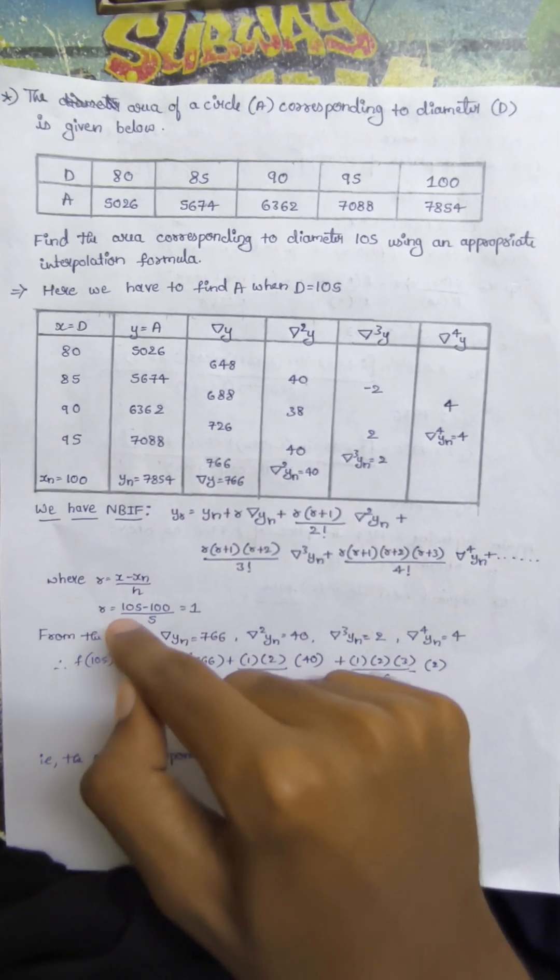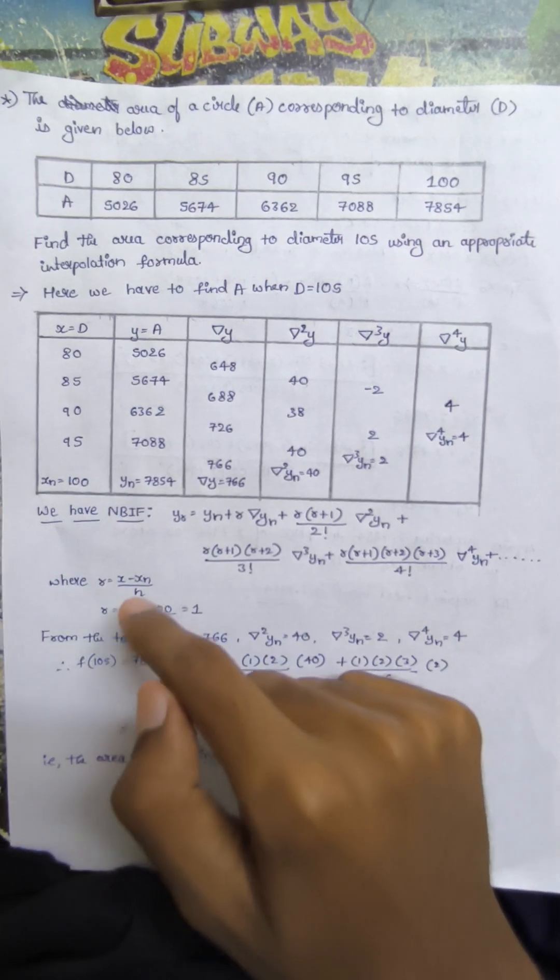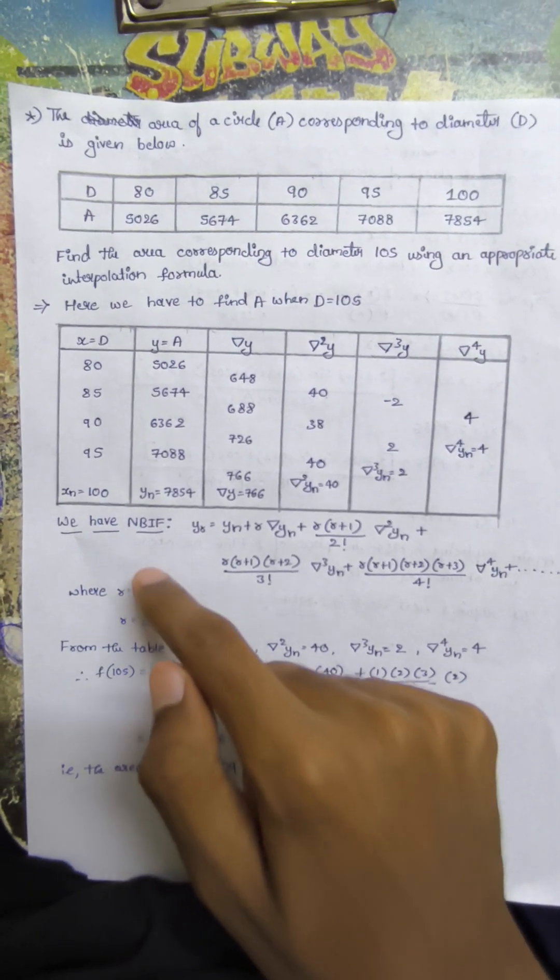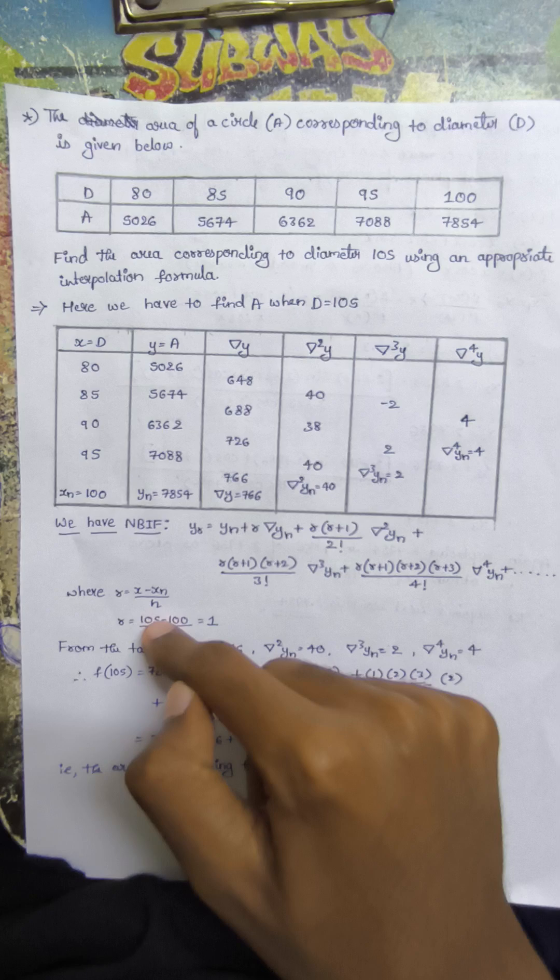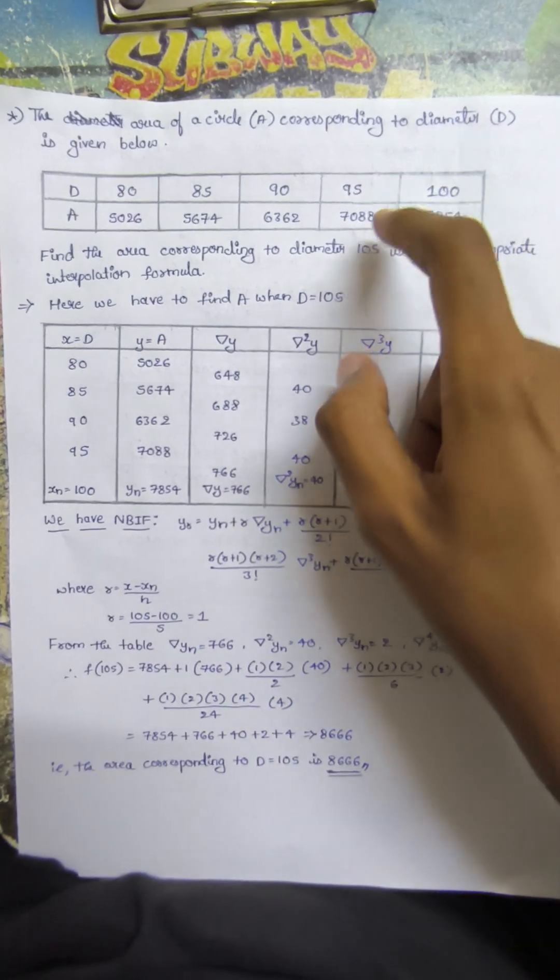We need to find r. r equals (x - xn)/h. The x value is... sorry, x value is 105, we have to find for 105.